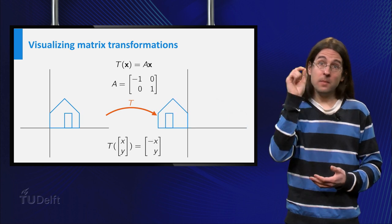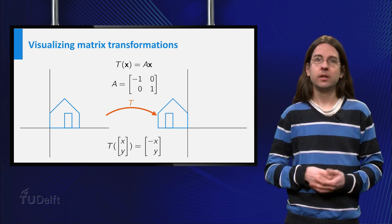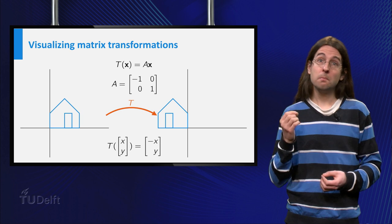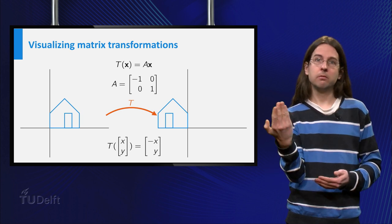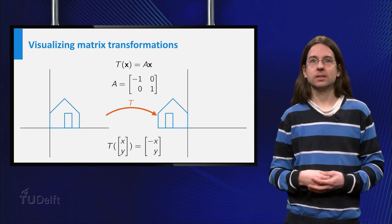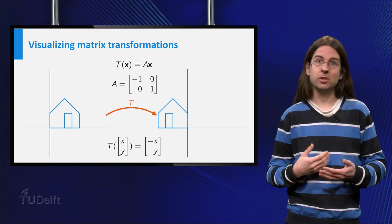If we consider [[-1,0],[0,1]], we map (x,y) to (-x,y). We reflect the vector in the y axis, so we get a mirror image of the house.